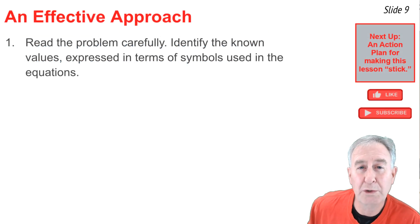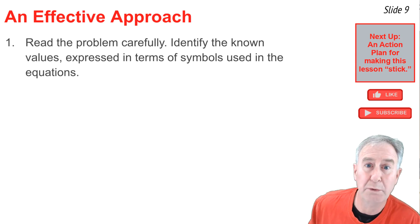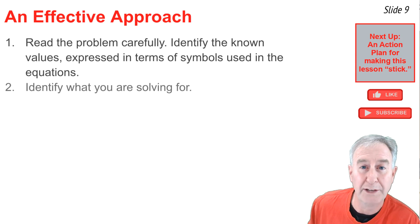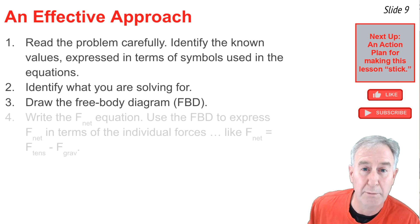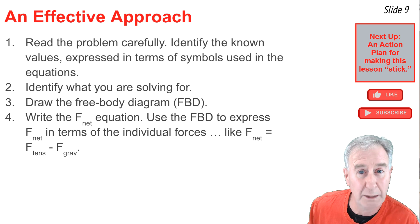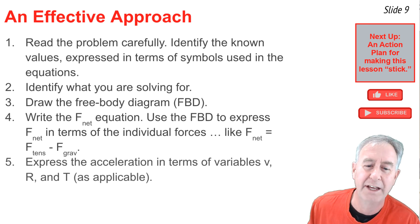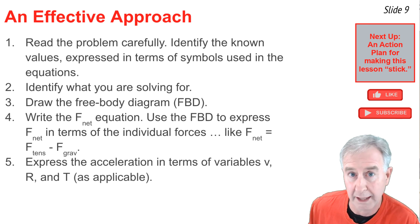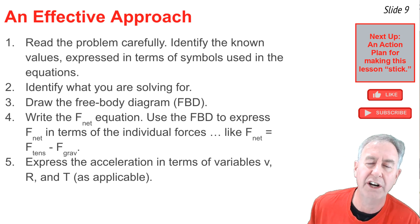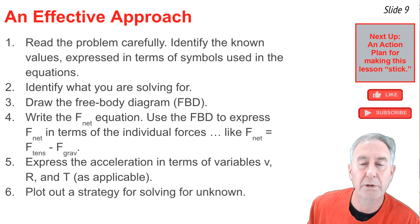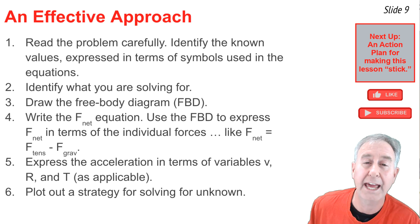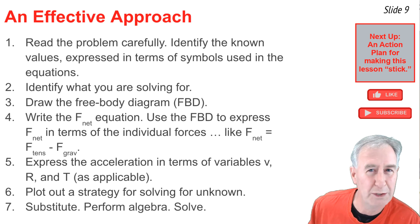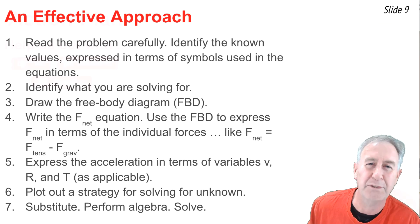To summarize the approach to these problems: first, read carefully and identify what you know in terms of equation variables. Identify what you're looking for, then draw a free body diagram. From the free body diagram write an F_net expression — such as F_net = F_tension − F_grav. Express the acceleration using F_net = ma in terms of v, r, and T as applicable. Then plot out a strategy, perform your algebra, do your substitutions, pull out your calculator, and solve for the unknown.